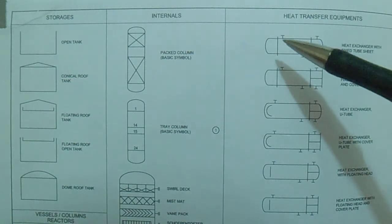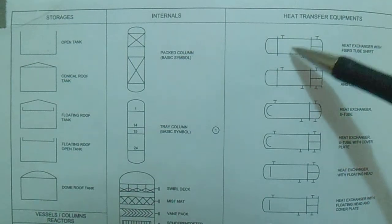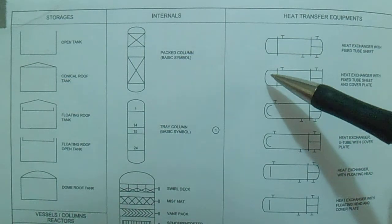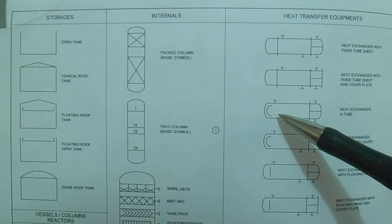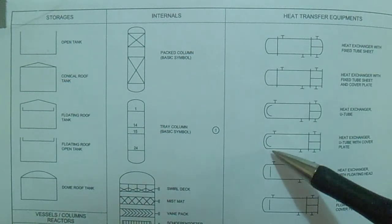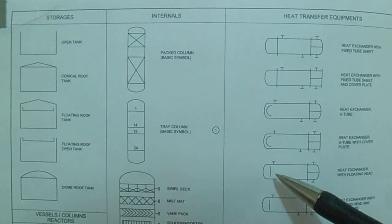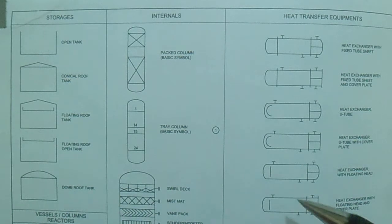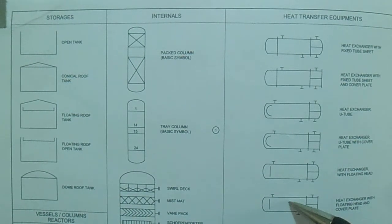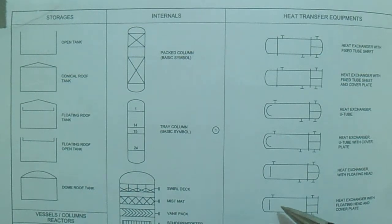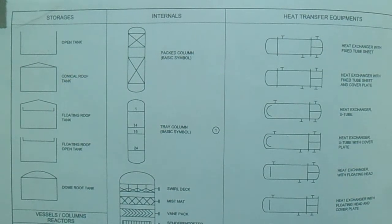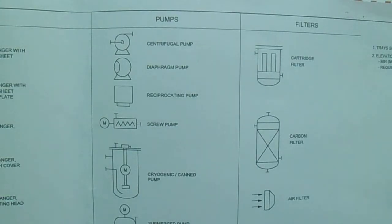For heat transfer, we have exchangers: a fixed tube sheet heat exchanger, a heat exchanger with cover plate, a U-tube exchanger, a U-tube exchanger with cover plate, a heat exchanger with floating head, and a heat exchanger with floating head and cover plate.